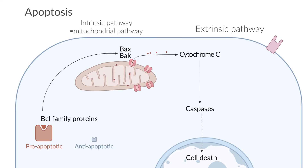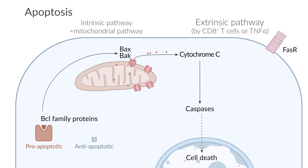The second pathway, the extrinsic pathway, is initiated by receptors on the cell surface, such as the FAS receptor. FAS, or first apoptotic signal, is aptly termed the death receptor. The FAS receptor can be activated by other cells, such as cytotoxic T cells, which have a ligand for FAS, or by messenger molecules such as tumor necrosis factor. Once activated, it initiates a cascade that also results in the activation of caspases and subsequent cell degradation.